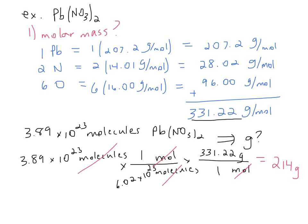On your calculator, put the numbers in parentheses so it works out correctly. Take 3.89 times 10 to the 23rd, divided by 6.02 times 10 to the 23rd, then multiply by 331.22, and you should get 214 grams.